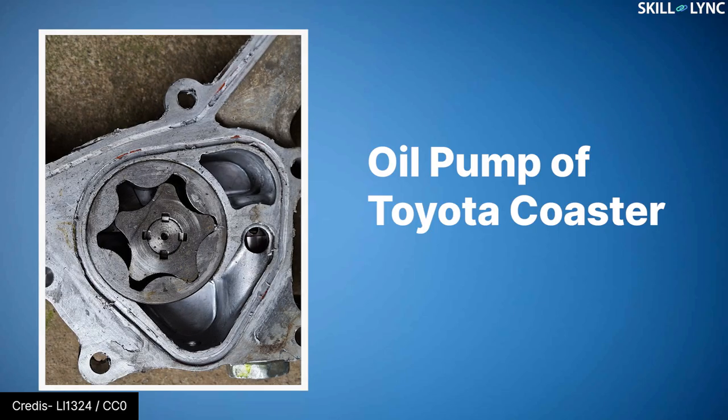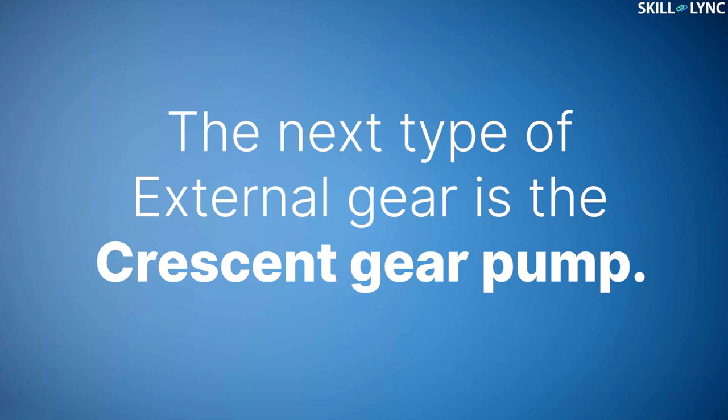The gear rotor pumps are most commonly used in automobiles to pump lubricant or oil. This is because these pumps are smaller than external gear pumps and are also able to pump viscous fluids efficiently. The next type of external gear pump is the crescent gear pump.